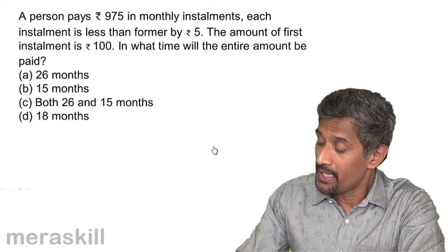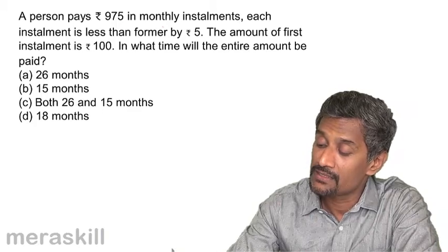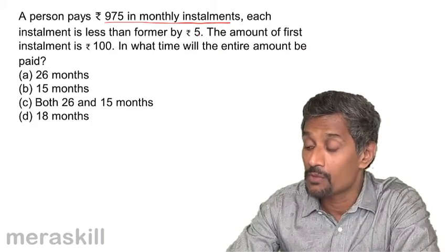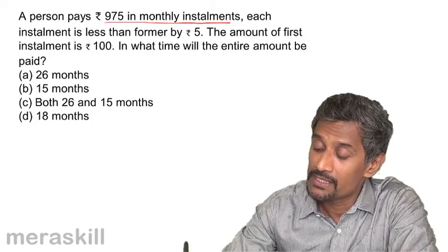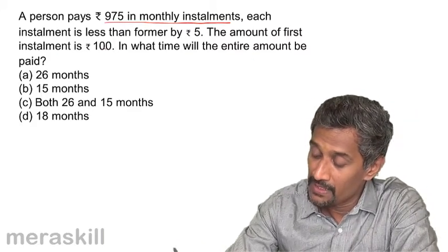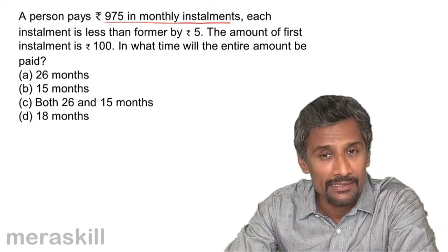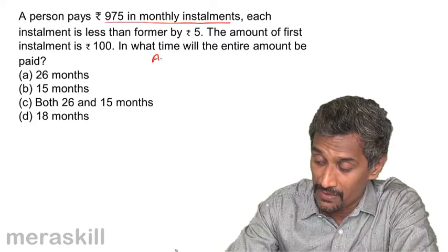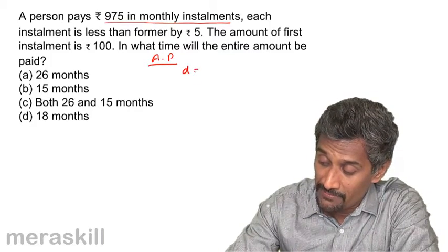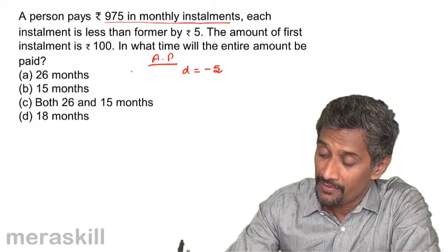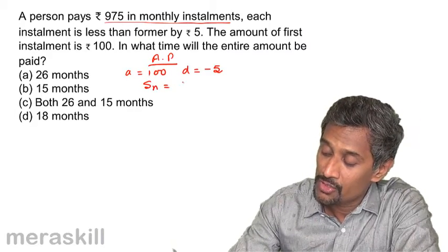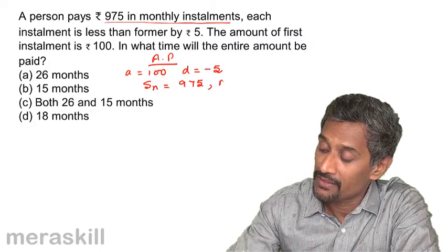Next problem: a person pays ₹975 in monthly installments. Each installment is less than the previous one by ₹5, and the first installment is ₹100. We need to find in how many months the entire amount will be paid. Since each term decreases by ₹5, this is an AP with a = 100 and d = −5.